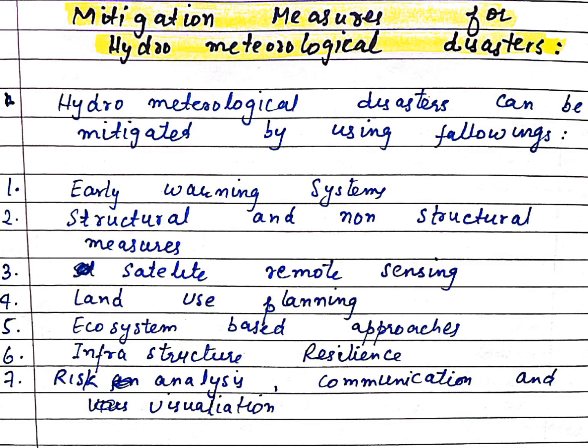Now, mitigation measures for hydrometeorological disasters — what steps can we take to reduce the damage? Hydrometeorological disasters can be mitigated using the following measures. First, early warning systems: we should establish early warning systems so that whenever a hydrometeorological disaster is approaching, we are informed in advance.